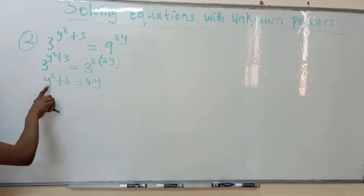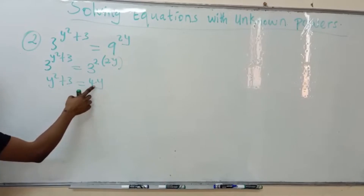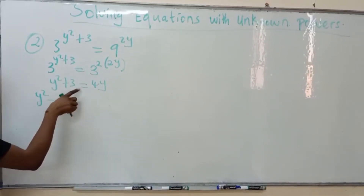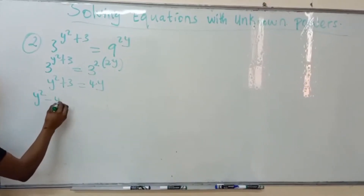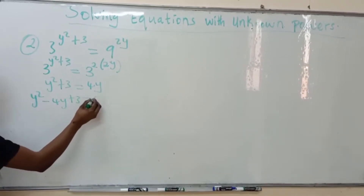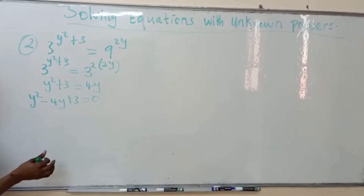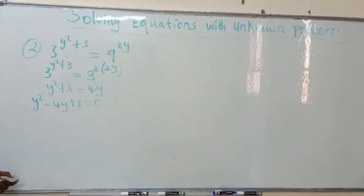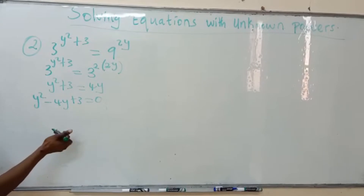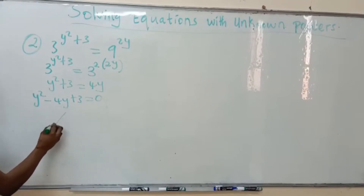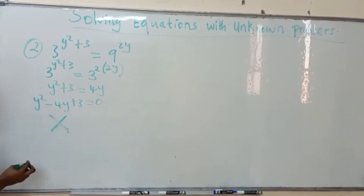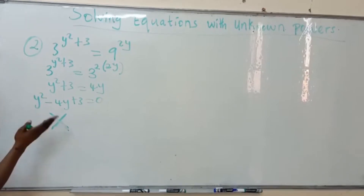We bring 4y to the other side. We have y squared minus 4y plus 3 equals 0. Now we have a quadratic equation. I will use a factoring method — I call this the trial-and-error method — to find the factors.